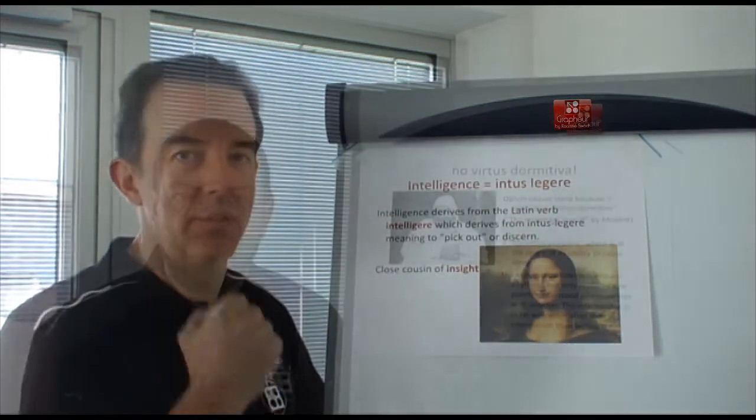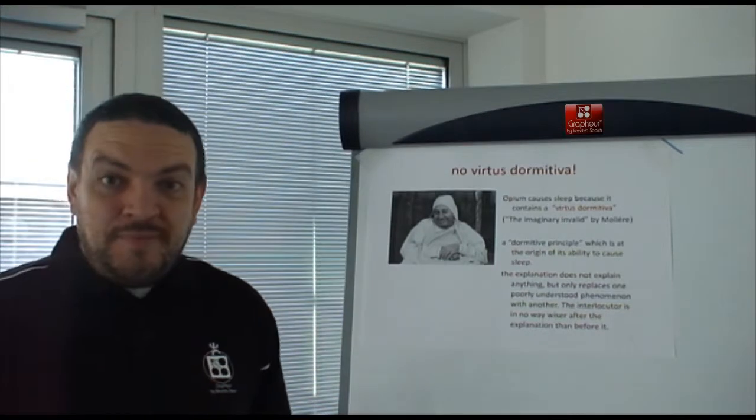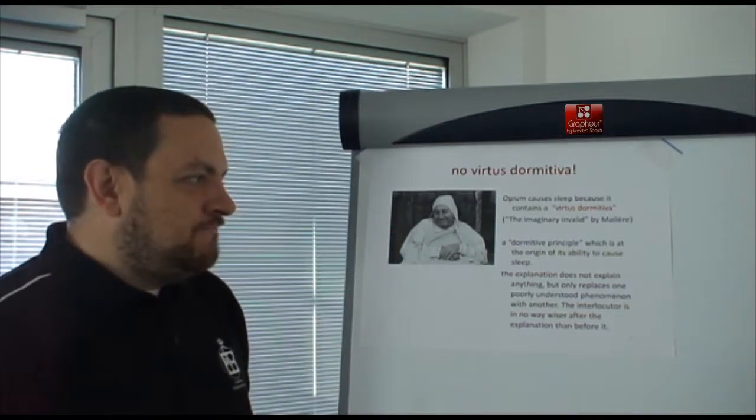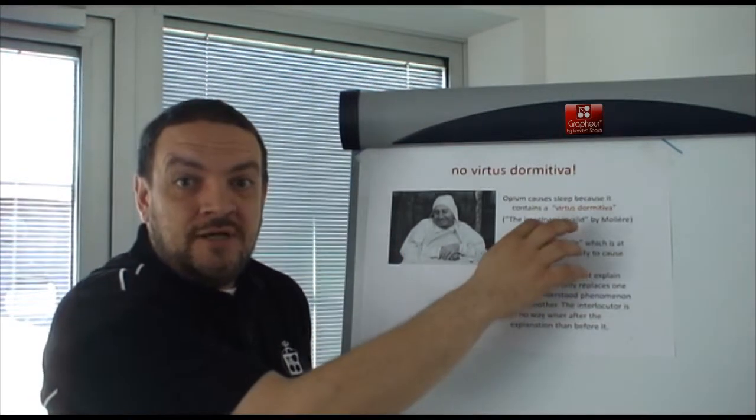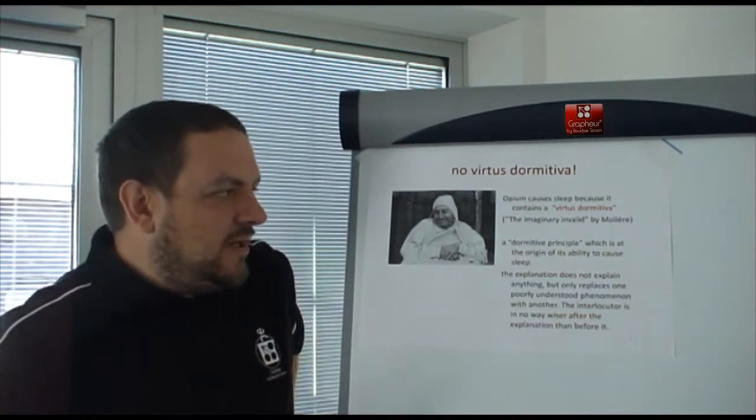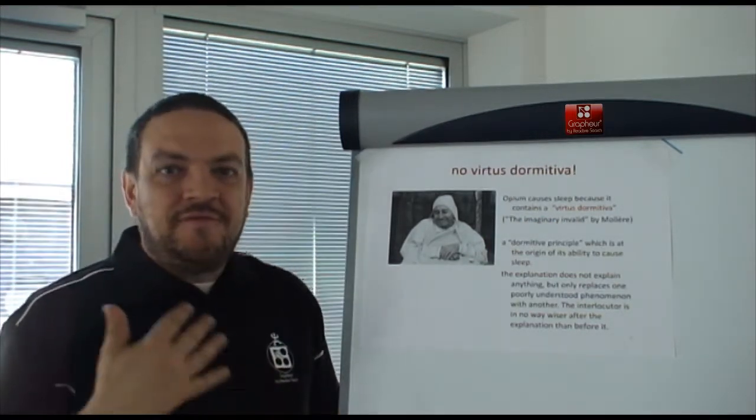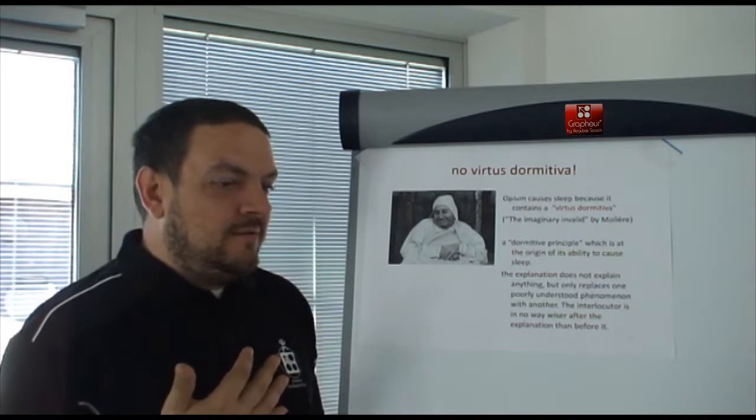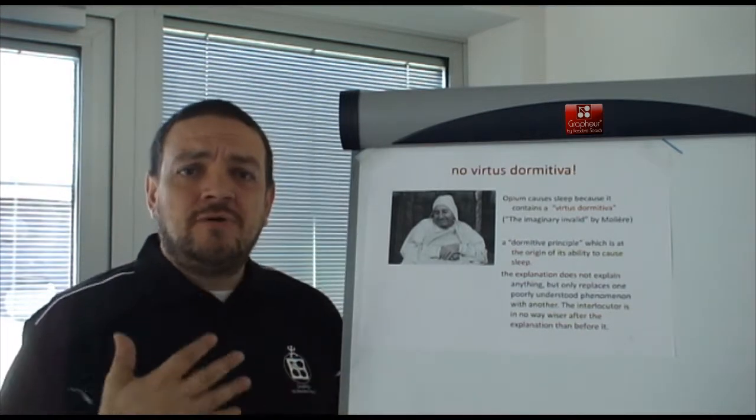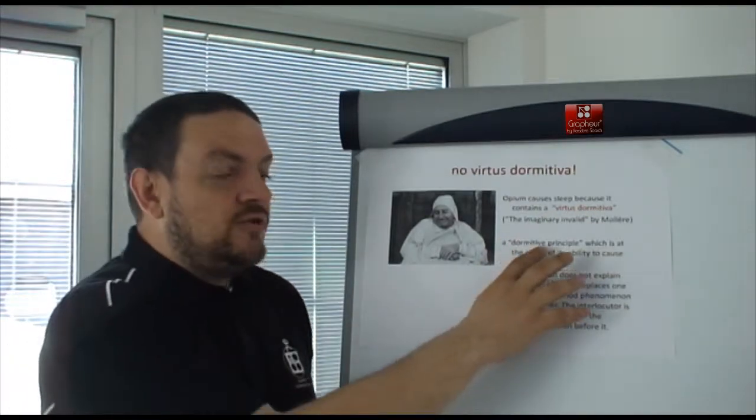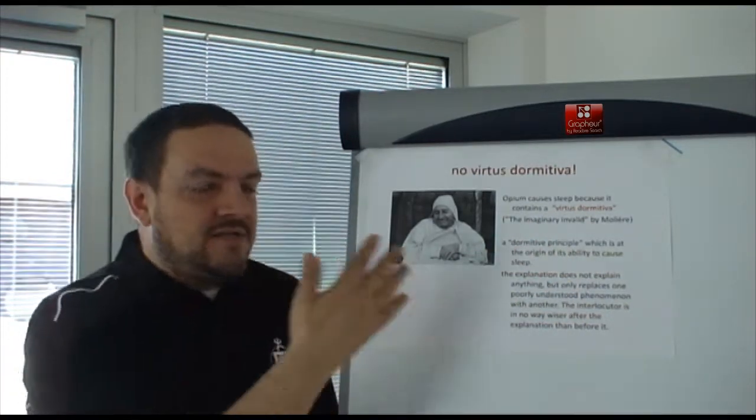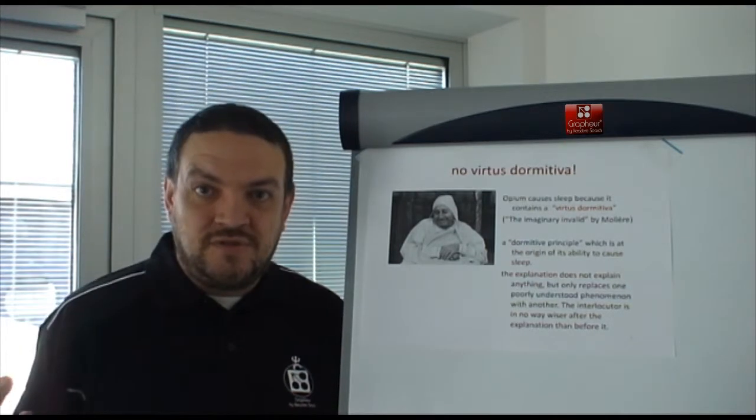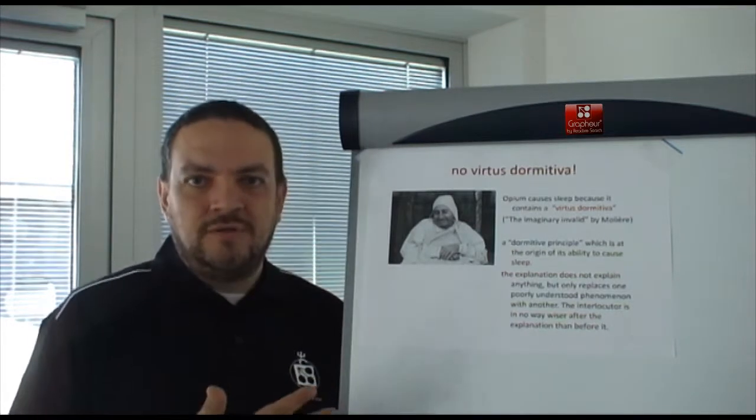To explain better what we mean by a simple model, let me show you a counter-example. In the play The Imaginary Invalid by Molière, we have a tentative explanation of the reason why opium causes people to fall asleep. And they said it causes people to fall asleep because it contains a virtus dormitiva, a dormitive principle. Actually, you see, this does not explain anything. It's just expressing the same thing with different words. And this is exactly what we don't want to do with our data.